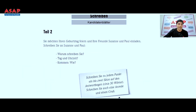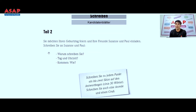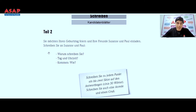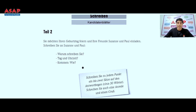Now let's go to Teil Zwei. You have to write one email or letter. The theme is given: you want to celebrate your birthday and you are inviting your friends Zuzana and Paul. You are writing them one letter. You have to cover three points: why you are writing, the day and time of celebration, and how they are coming.